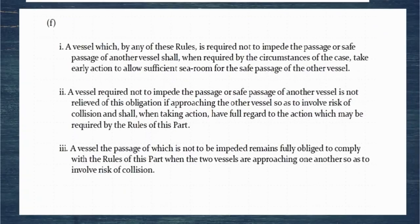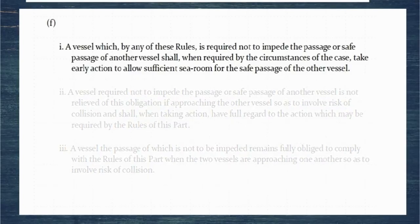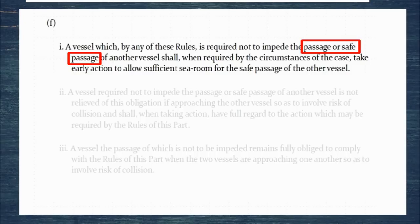Now we're on to Part F, which deals with not impeding passage and safe passage. It's actually quite a complicated rule, and Part F forms three parts. First: a vessel which, by any of these rules, is required not to impede the passage or safe passage of another vessel shall, when required by the circumstances of the case, take early action to allow sufficient sea room for the safe passage of another vessel. The rules talk about impeding passage or impeding safe passage, but the action taken is the same regardless. What we're looking to do is allow sufficient sea room — we're not talking about avoiding collisions, but allowing sufficient sea room for them.